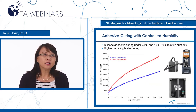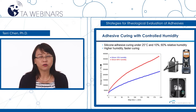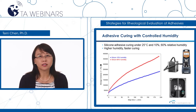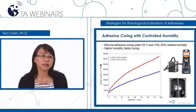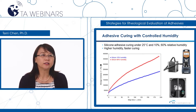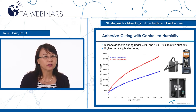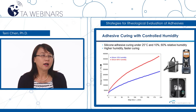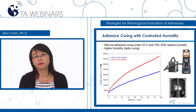Silicon-based adhesive curing is sensitive to environmental humidity. Using a rheometer with a humidity control chamber, we can monitor the curing process with controlled temperature and humidity. This graph shows an example of monitoring a silicone caulk curing under different humidity levels. The results show that this sample cures much faster under a higher humidity environment.